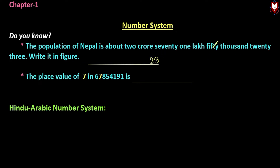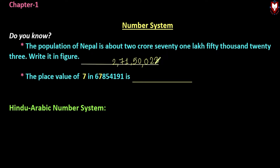Next, we have 50,023, meaning 50,000 with 4 digits — 0,023. Then if there is 1 lakh, that means 71 lakh. So altogether that means 2,71,50,023. That is the number form.